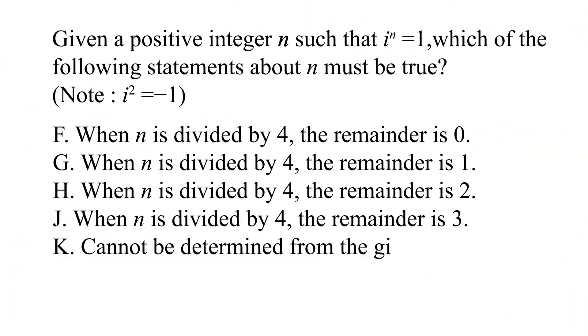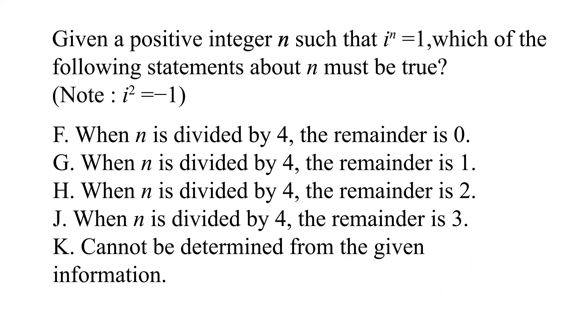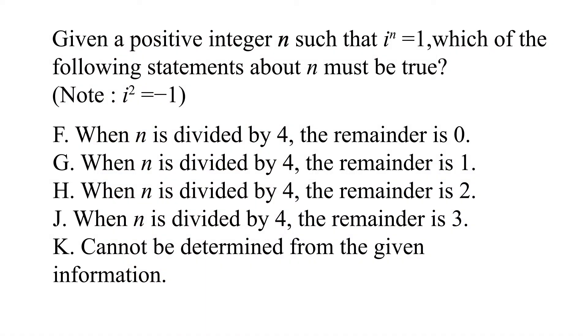And let's just keep moving along to our next question here. Given a positive integer N such that i^N is equal to 1, which are the following statements about N must be true? Again, they're giving us this note. They're saying it a million different ways. i² is equal to -1. And we have that when N is divided by 4, the remainder is zero. When N is divided by 4, the remainder is 1, et cetera, et cetera, et cetera. So this is a little different because we're not just solving an algebraic statement. We're kind of inferring a little extra here.